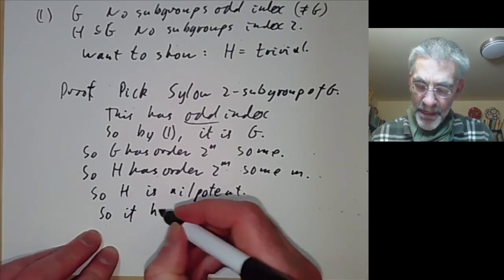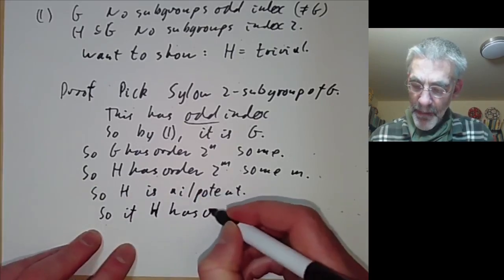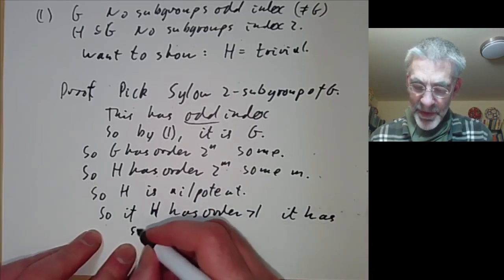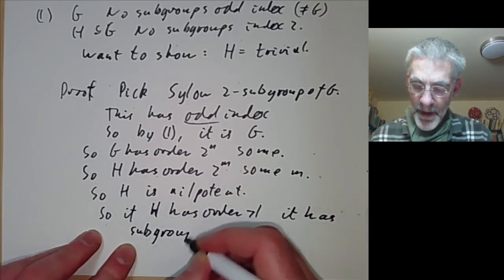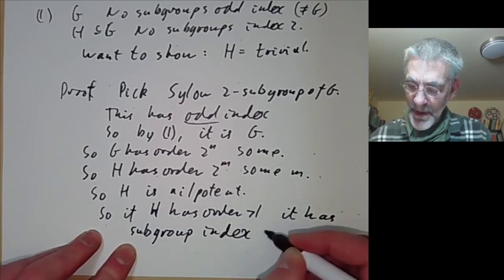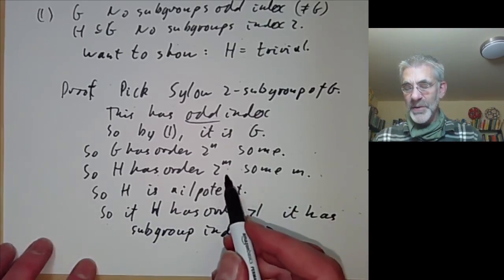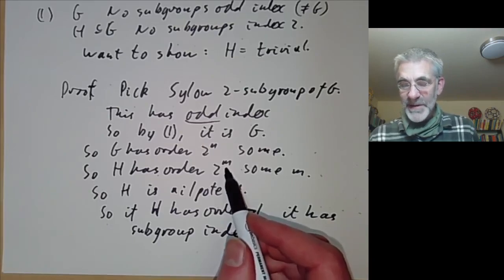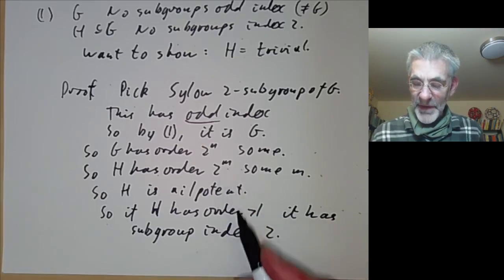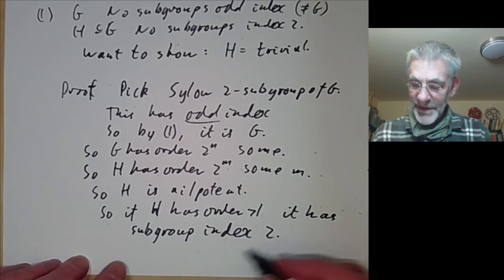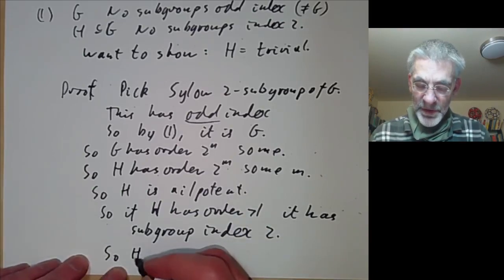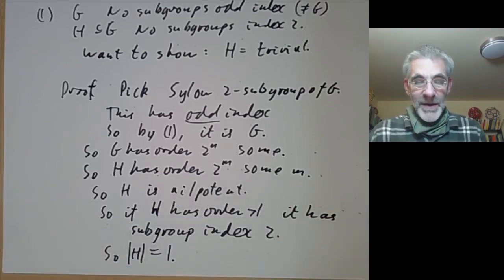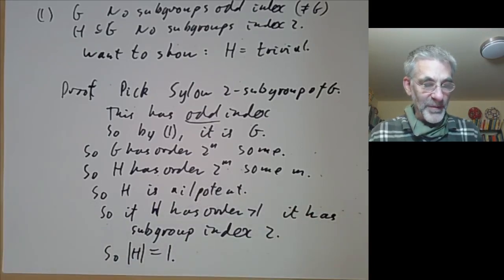So if H has order greater than 1 it has a subgroup of index 2. Because by the theory of nilpotent groups any group of order 2 to the m for m greater than 0 has a subgroup of index 2. And H can't have a subgroup of index 2. So the order of H is equal to 1. So there are no extensions of the complex numbers.